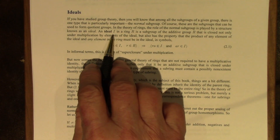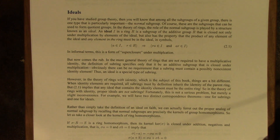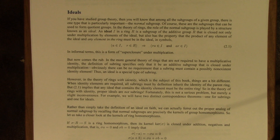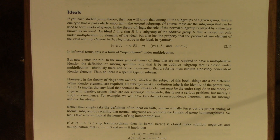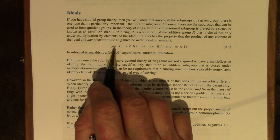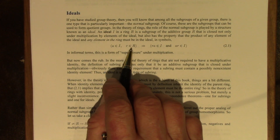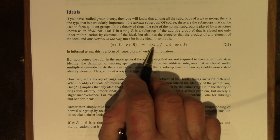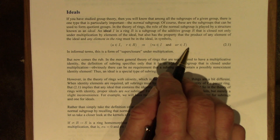An ideal I in a ring R is, by definition, a subgroup of the additive group of R that is closed not only under multiplication by elements of the ideal, but also has the property that the product of any element of the ideal and any element in the ring must be in the ideal. So in symbols, if A is in the ideal and R is in the ring, then the product RA and the product AR lie in the ideal.